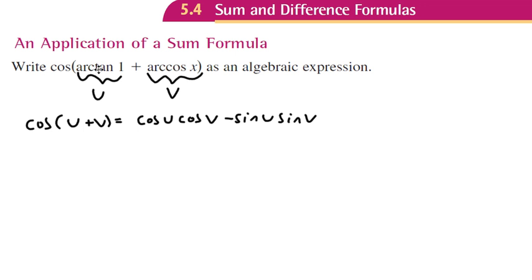Let's let u equal arctan of 1. If u equals arctan of 1, that means if I take the tangent of both sides, tangent of u equals—if I take tangent of arctan, they cancel out and I just get 1. So tangent of u equals 1.